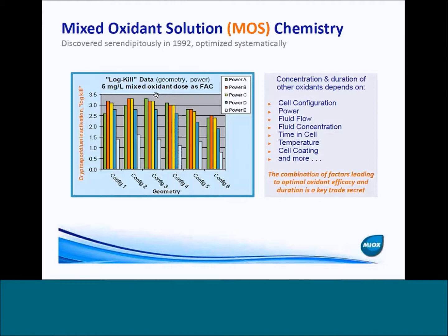I get the question a lot about how do you know it's different and how did you develop the technology? We don't have a supercomputer that predicts under these specific conditions you would expect a difference in chemistry. What we've done is systematically optimized for all of these different factors — cell configuration and cell set points — and we look at those combinations of factors that lead to the best disinfection efficacy as a key trade secret. Whereas our hypochlorite generators are optimized around lowest cost or fastest payback, these are optimized around maximum disinfection efficacy. So really, it's empirically derived and it's been optimized systematically.